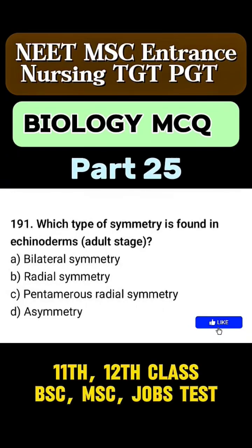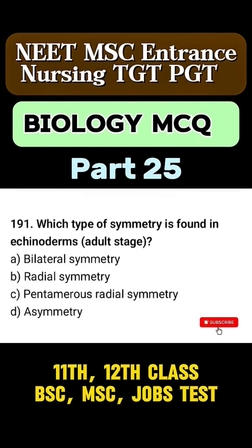Question 191. Which type of symmetry is found in echinoderms? Correct answer is option C. Pentamerous radial symmetry.